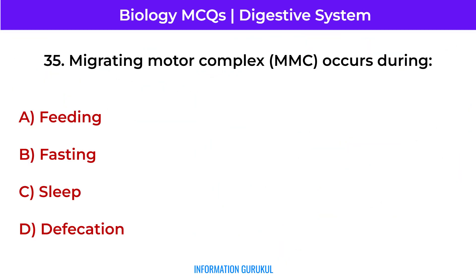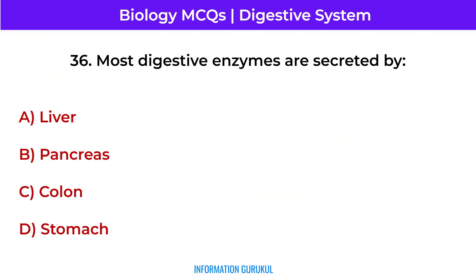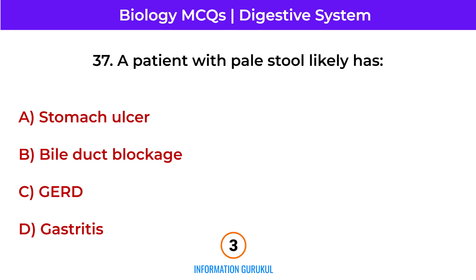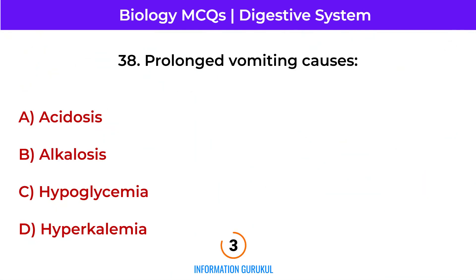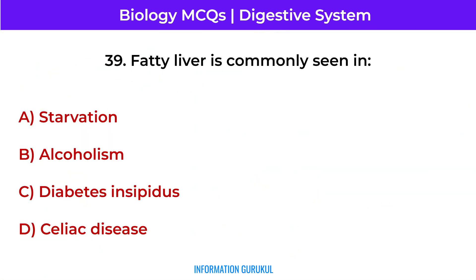Migrating motor complex occurs during fasting. Most digestive enzymes are secreted by the pancreas. A patient with pale stool likely has bile duct blockage. Prolonged vomiting causes alkalosis. Fatty liver is commonly seen in alcoholism.